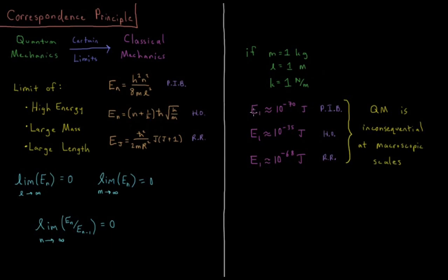What are the energy levels of these systems when we see that? E1 of particle in a box under these conditions, if you substitute in the numbers, is about 10 to the minus 70 joules. This is obviously inconsequential for large macroscopic heavy objects.